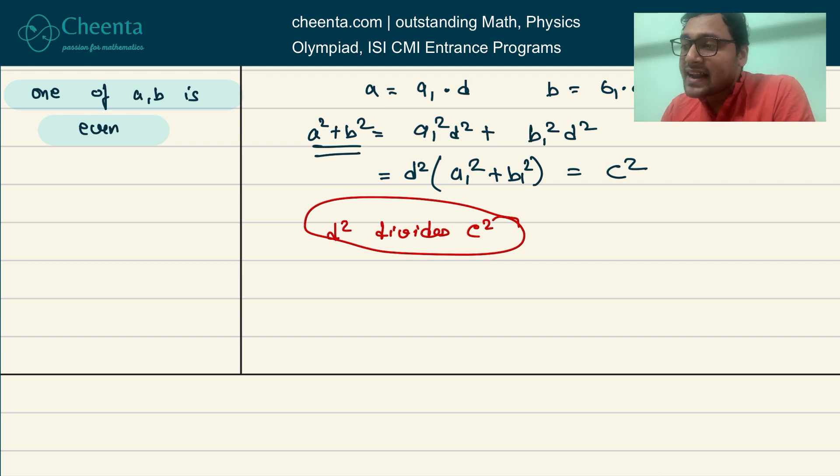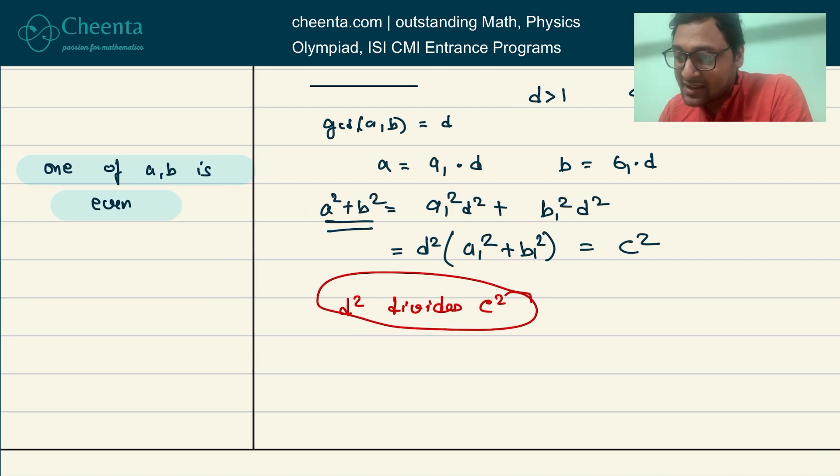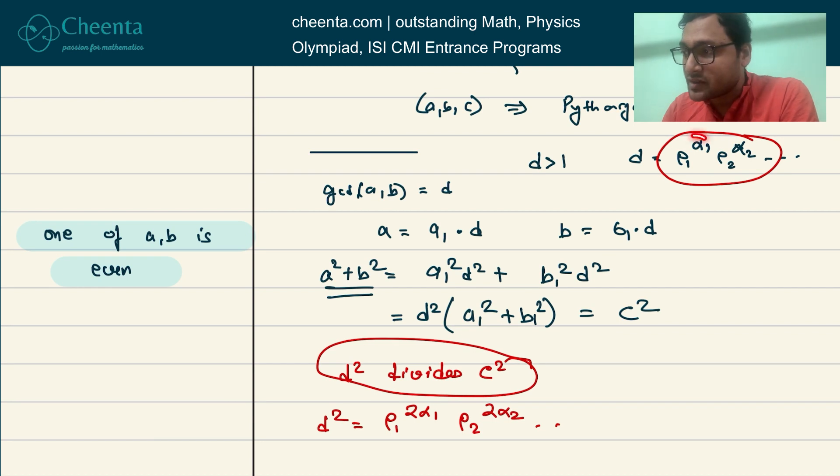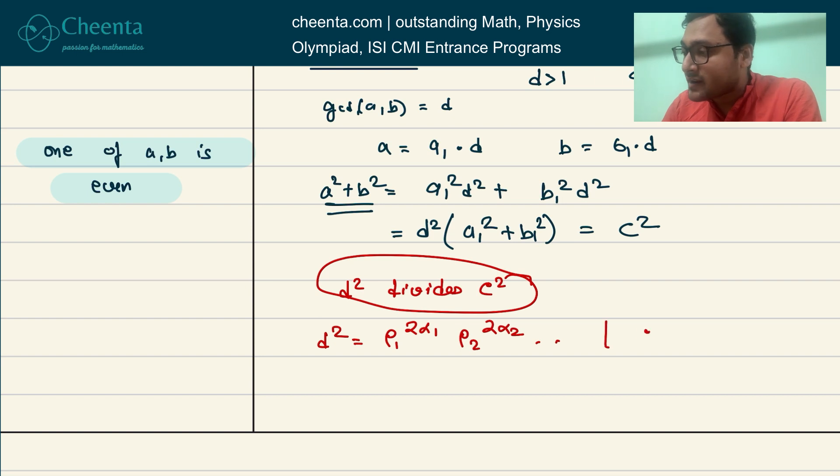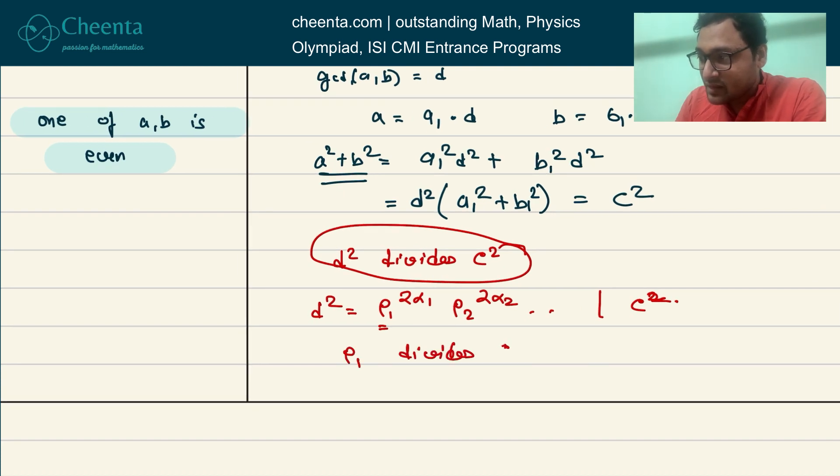What we can say though is that P₁, P₂, these prime factors of D—so D² is now P₁^(2α₁), P₂^(2α₂), these are the prime factors. I just multiplied the powers with 2. So this divides C². Now prime numbers are unbreakable, so we can say that each of these prime numbers divides C. For example, we can say P₁ divides C. If P₁ divides C², then P₁ would divide C. That is true because P₁ is a prime number. You cannot glue parts of P₁ to make P₁.